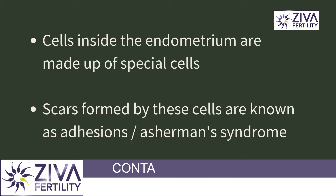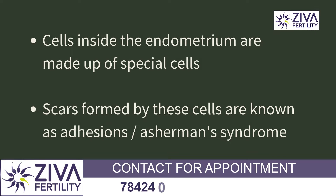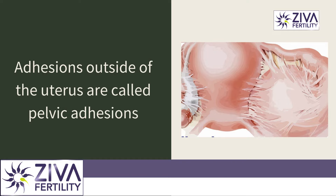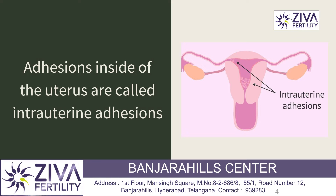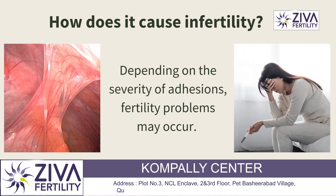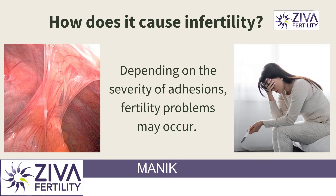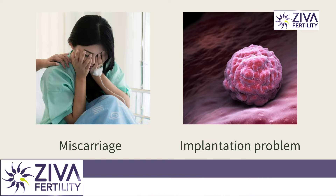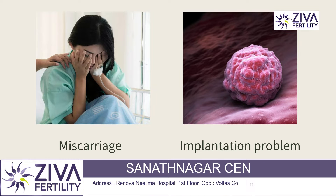The cells inside the endometrium are made up of special cells, and if these form scars then it is known as adhesions. If the adhesions are outside the uterus then it is called pelvic adhesions. If it is inside the uterus it is called intrauterine adhesions, and depending upon the severity of the adhesions,